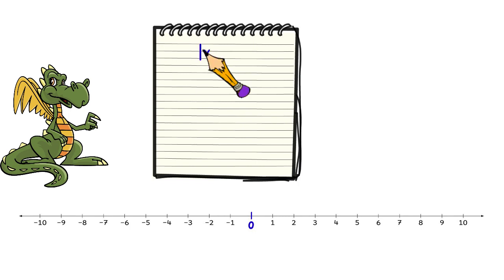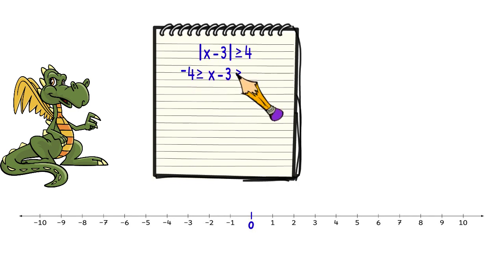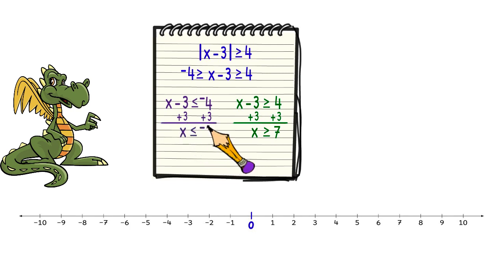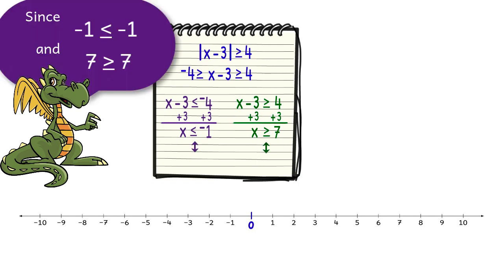Now let's try the problem: the absolute value of x minus 3 is greater than or equal to 4. First we write it without the absolute value bars as two inequalities: x minus 3 is greater than or equal to 4, or x minus 3 is less than or equal to negative 4. To solve, we add 3 to each side of both inequalities, getting x is greater than or equal to 7 or x is less than or equal to negative 1. Let's quickly graph all possible solutions. Because the original problem was greater than or equal to, we place a shaded circle on negative 1 and 7.